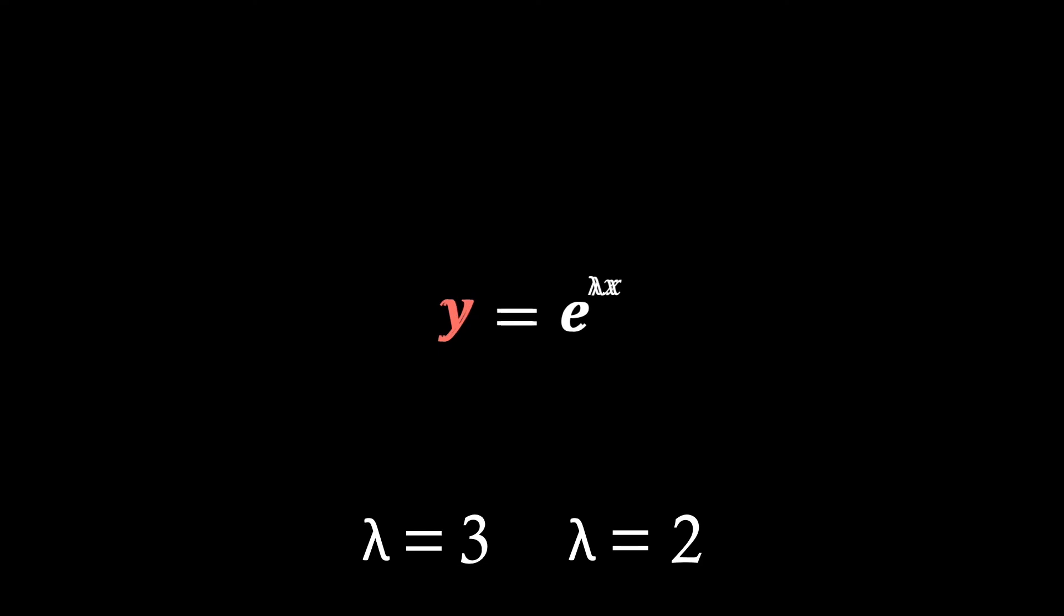Hence, we just have that y1 equals e to the 3x, and y2 equals e to the 2x. Now we give this in the form of our general solution, where we just add the two elements together. As we put this into the general form, we put constants before our terms, just in case we have any initial conditions.